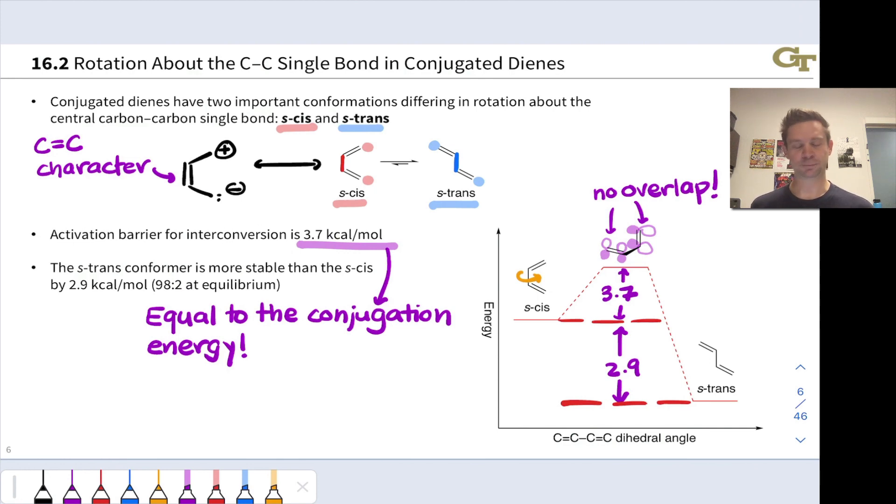This has important consequences on what we need to do to get that reaction to go. I don't want to say too much at this point. I'll just mention that we will see S-cis and S-trans conformers of conjugated dienes again, so you'll want to keep this concept in mind.